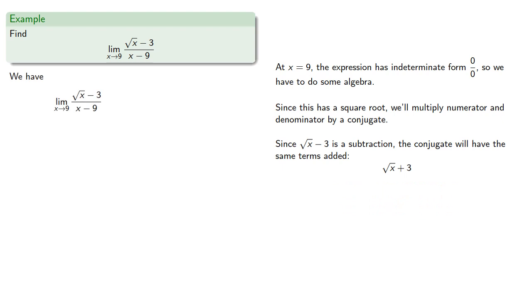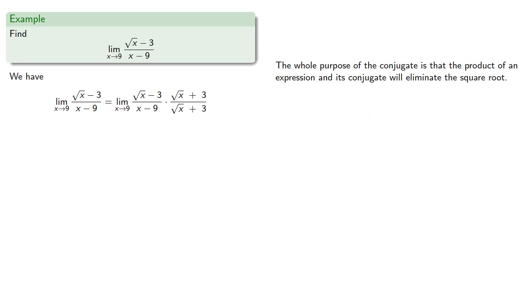So we'll take our expression, multiply numerator and denominator by the conjugate. Now remember, the whole purpose of the conjugate is that the product of an expression and its conjugate will eliminate the square root.